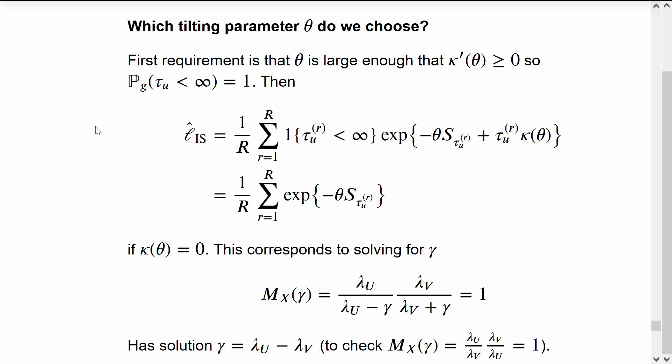If we choose the theta very carefully, then we can have the other simplification that occurs here, which is the last term in the exponential disappearing. That's when we choose theta to satisfy kappa theta equals 0.